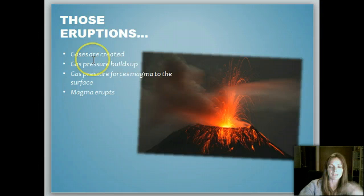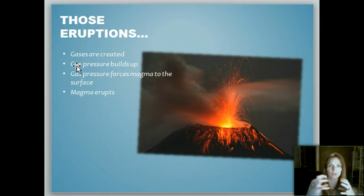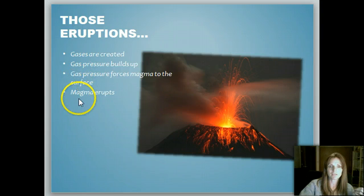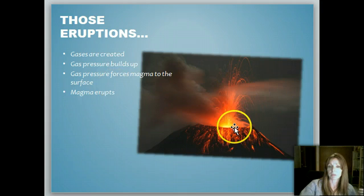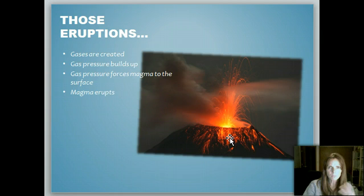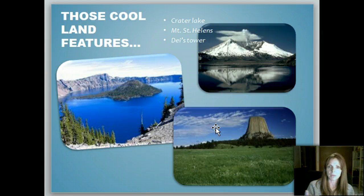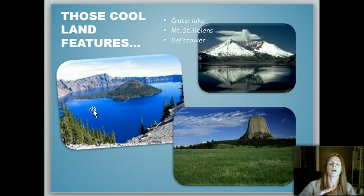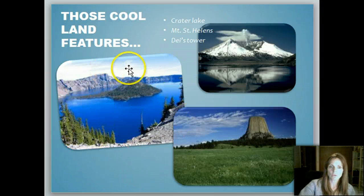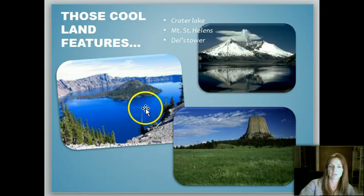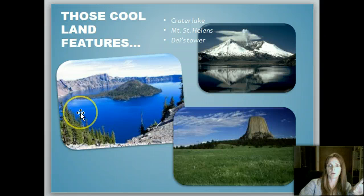Gases are created deep within the earth — that gas pressure builds up and needs somewhere to escape, so it forces the magma to the surface and the magma erupts. It forms some pretty cool land features. Here's Mount St. Helens. There's also Crater Lake, where a huge volcanic eruption long ago left a giant hole, and over time it filled up with crystal clear blue water. It's so beautiful — just kind of in the middle of nowhere.